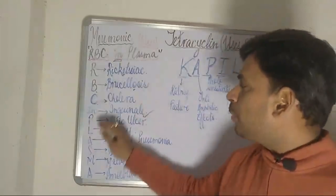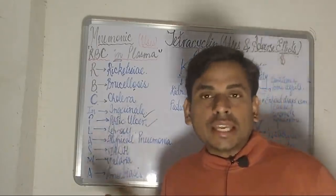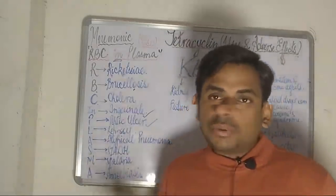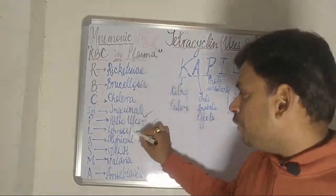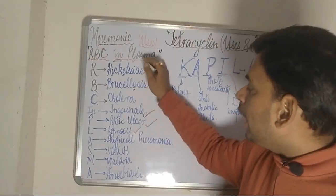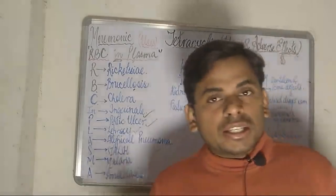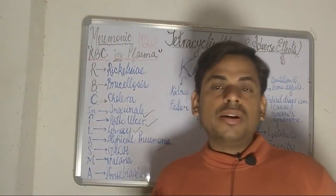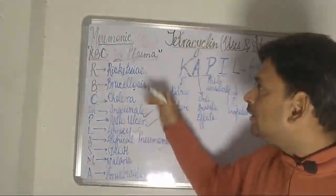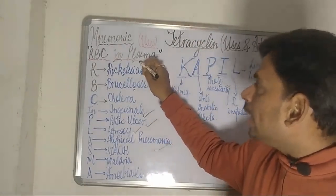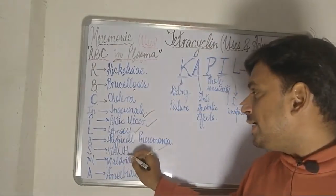The P of plasma is referring to peptic ulcers, so tetracyclines find their usage in the treatment of peptic ulcer as well. The L is referring to leprosy. The A refers to atypical pneumonia — particularly atypical pneumonia which can be treated by the use of tetracyclines. Moving on to the S, it refers to the treatment of SIADH — syndrome of inappropriate antidiuretic hormone.